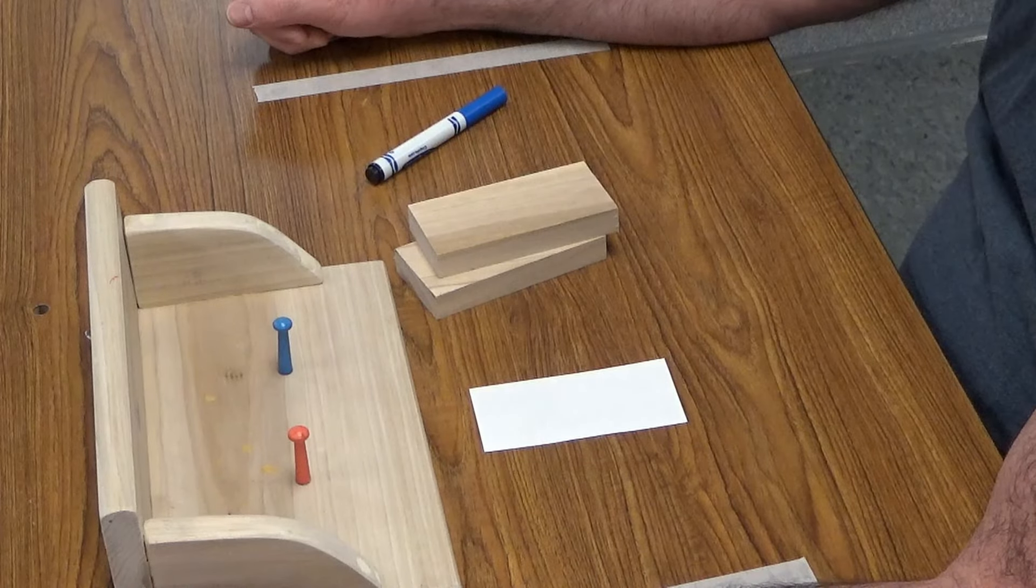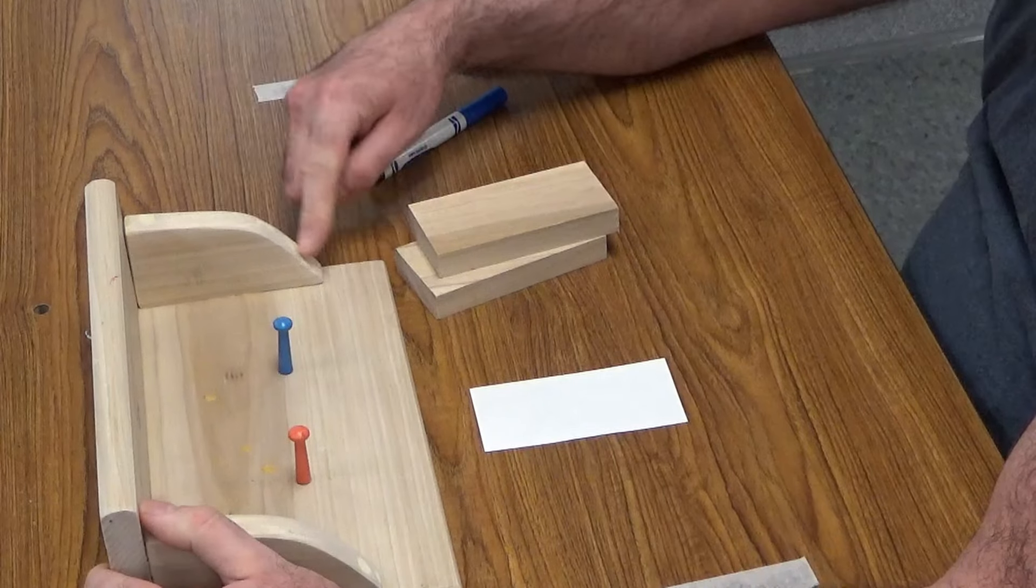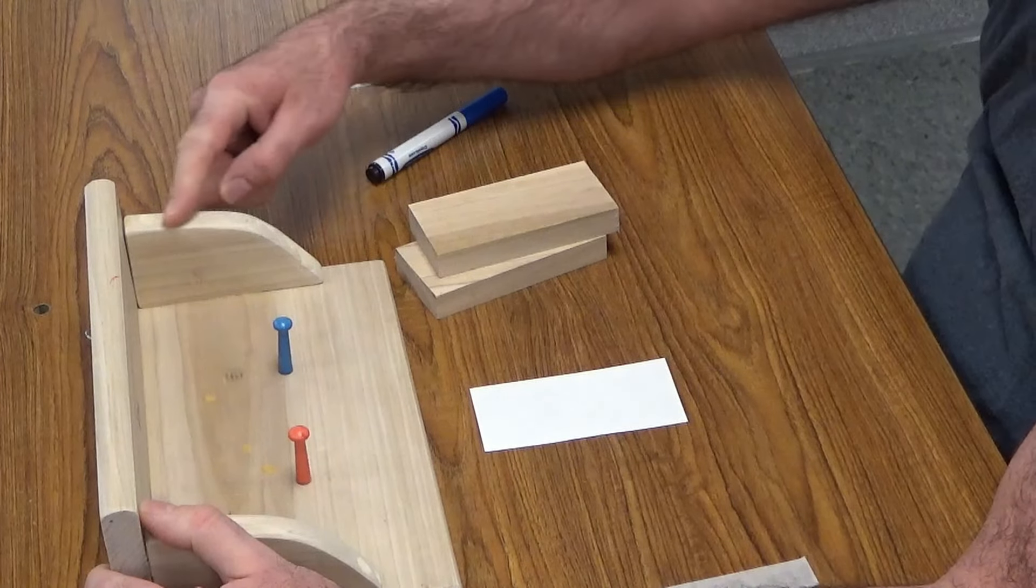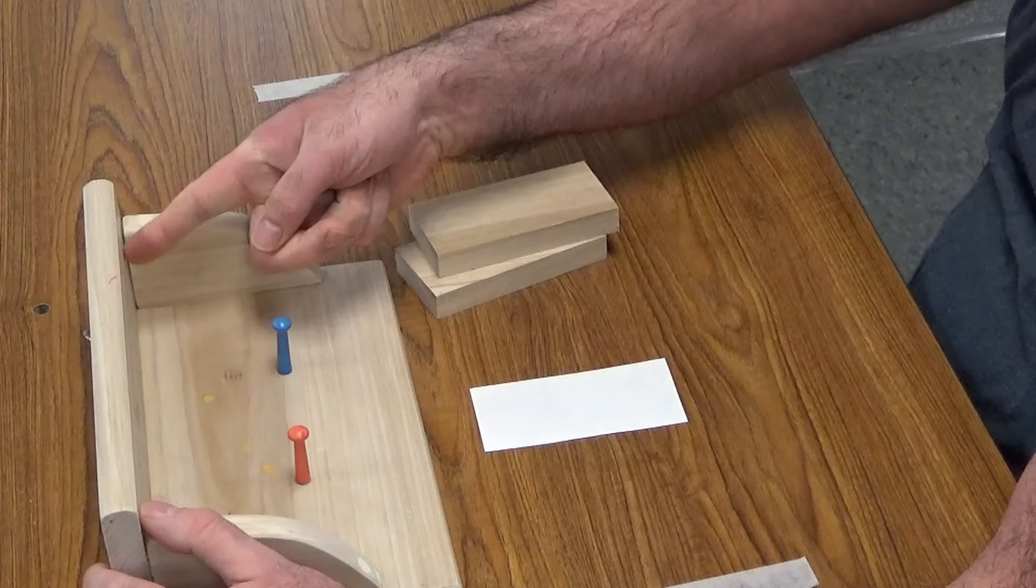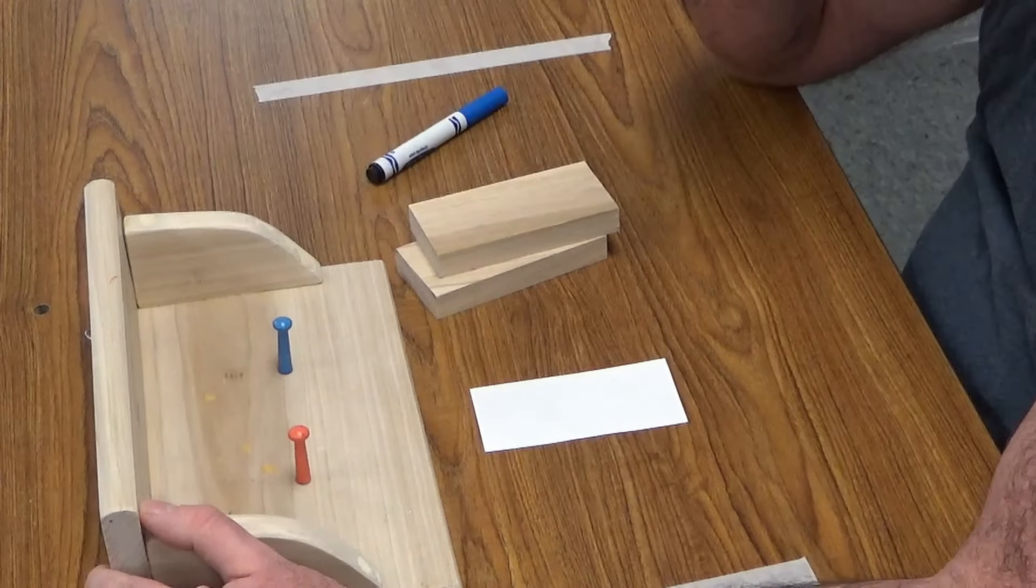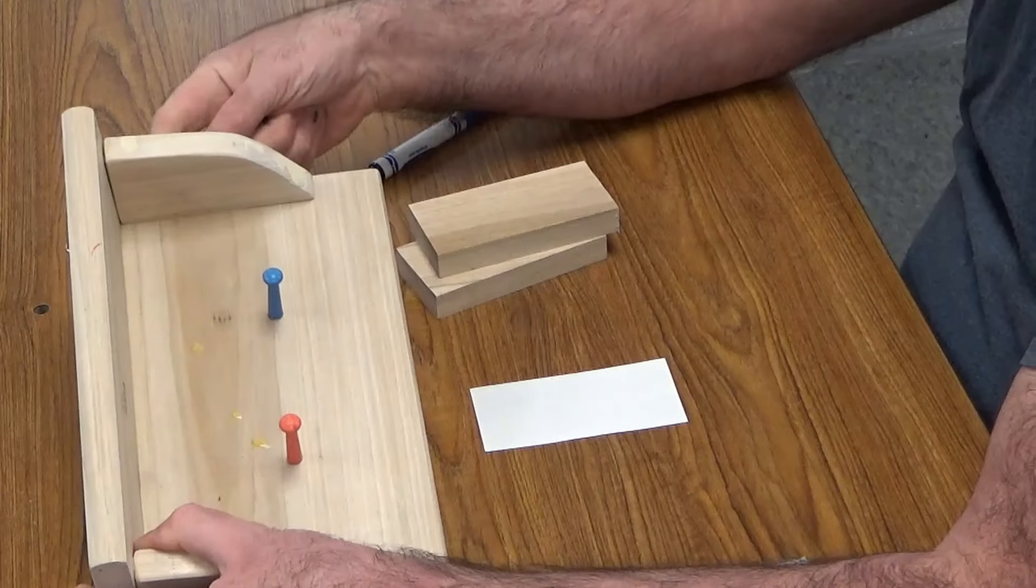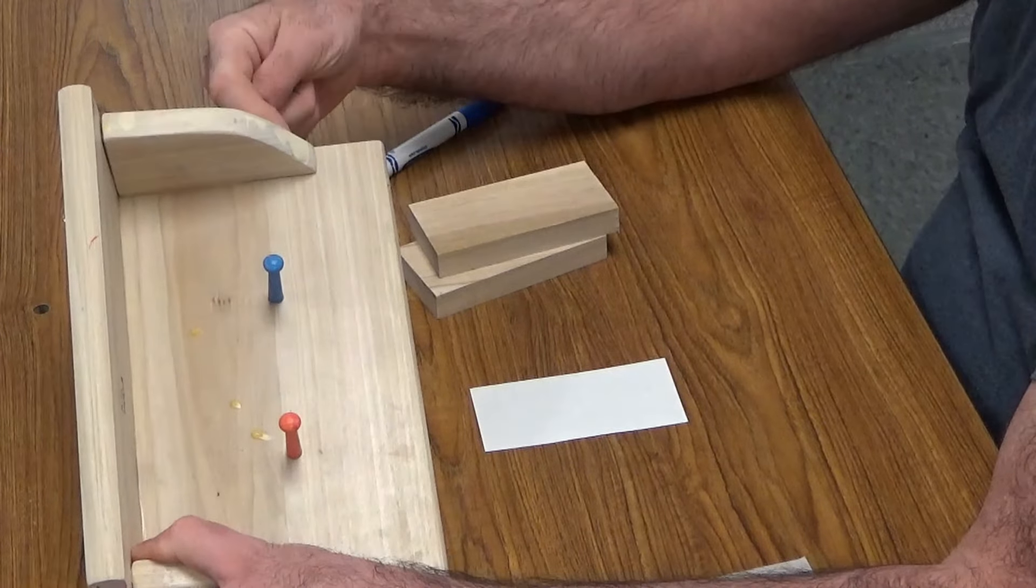The first step in building your shelf is creating your brackets that are going to go on the shelf. These are actually supposed to be set in an inch. The student didn't follow directions, but I'm using it as a sample anyway because they have a nice design.